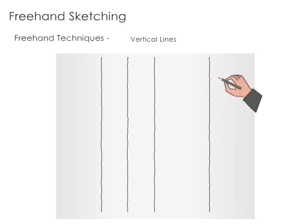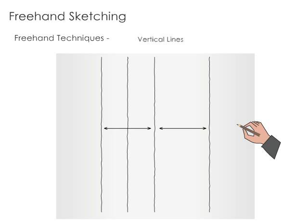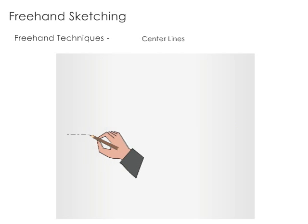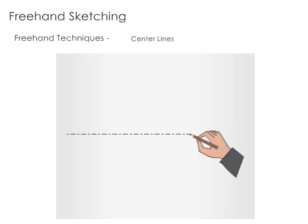If the distance between two parallels is to be increased, then it should be done proportionately. The center lines can be drawn in one stroke by combining short lines.